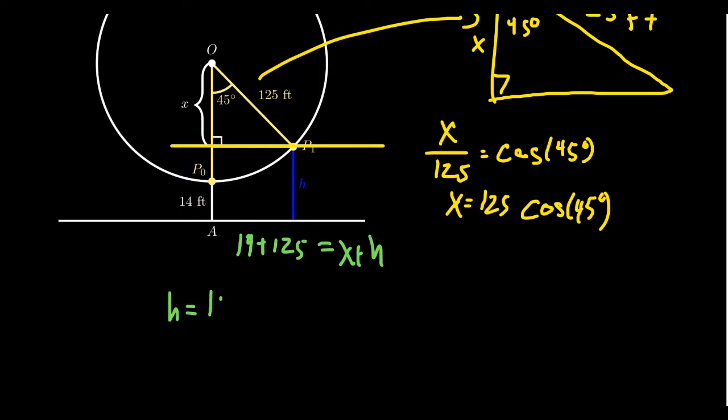H is going to equal 14 plus 125 minus X. We now see that X is equal to, just plugging it in here, we're going to end up with 14 plus 125 minus 125 times cosine of 45 degrees. So at this moment, we can start to simplify the calculation.